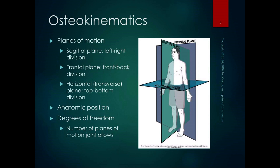When describing the motion of bones, we always describe them relative to the three cardinal planes of the body: sagittal, frontal, and horizontal. The sagittal plane divides the body into left and right halves — it slices right down the midline. The frontal plane is a front-back division, and the horizontal plane is a top-bottom division, also called the transverse plane. When standing in anatomical position, the intersection of those three planes is the center of gravity.